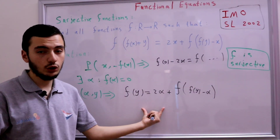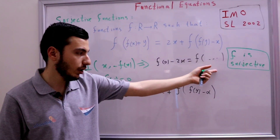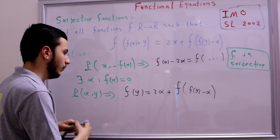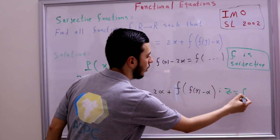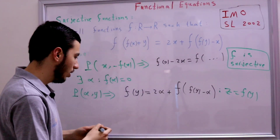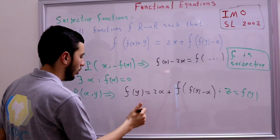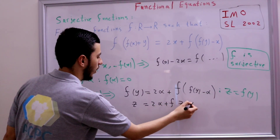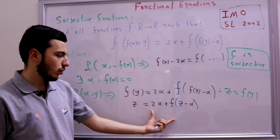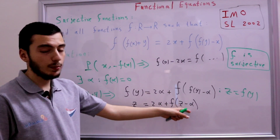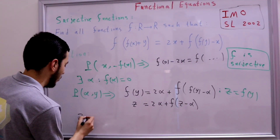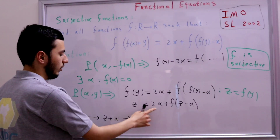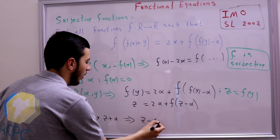Now we can use the first trick: since f is surjective and we have f(y) appearing, let z = f(y) where z is any real number. The functional equation becomes z = 2α + f(z - α). This is a very simple, straightforward functional equation. We can substitute z with z + α, giving us z + α = 2α + f(z), which simplifies to f(z) = z - α.